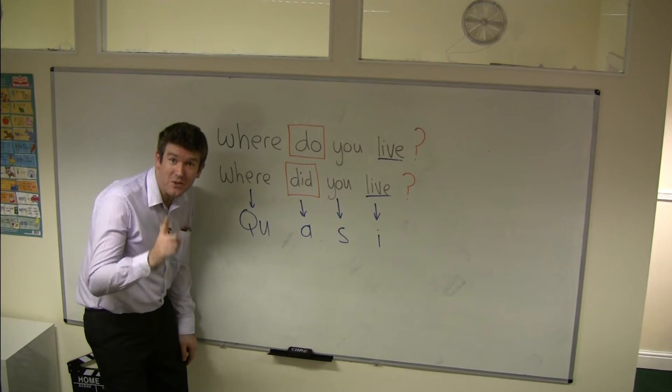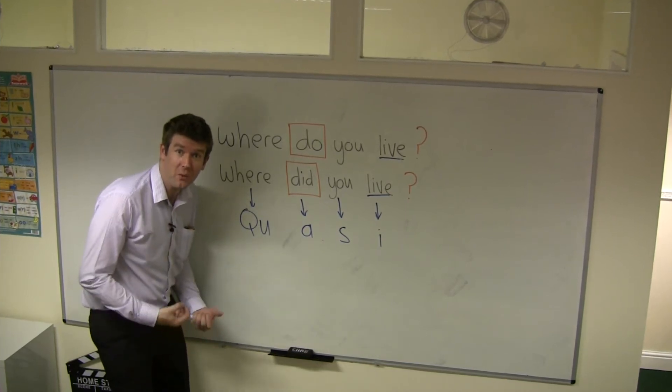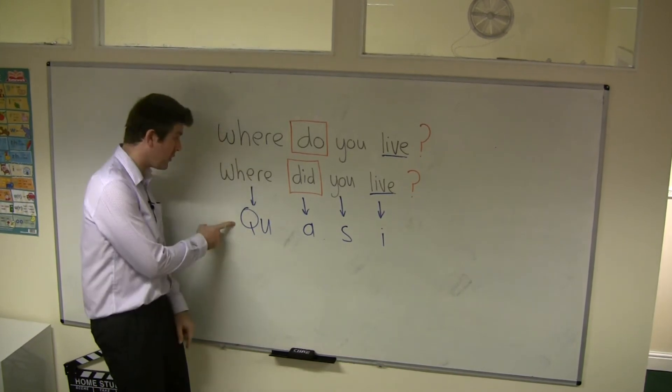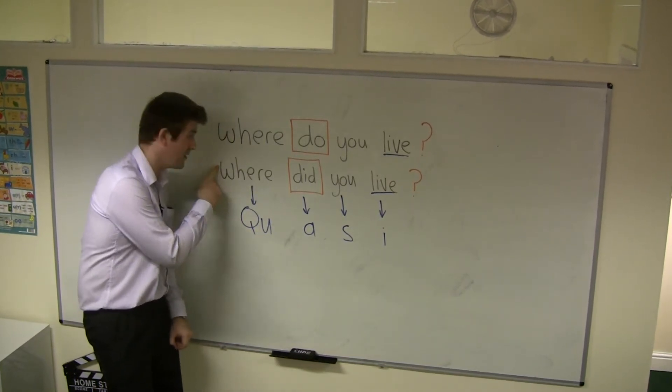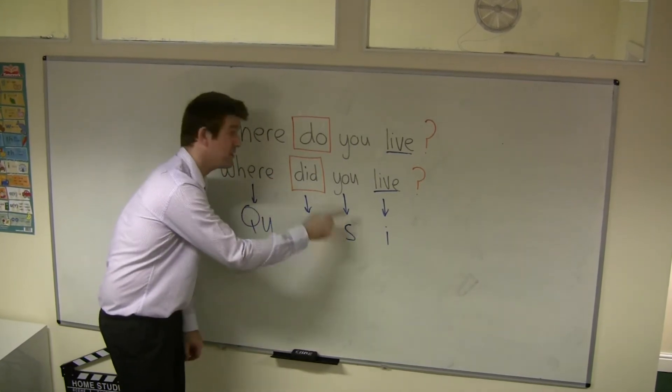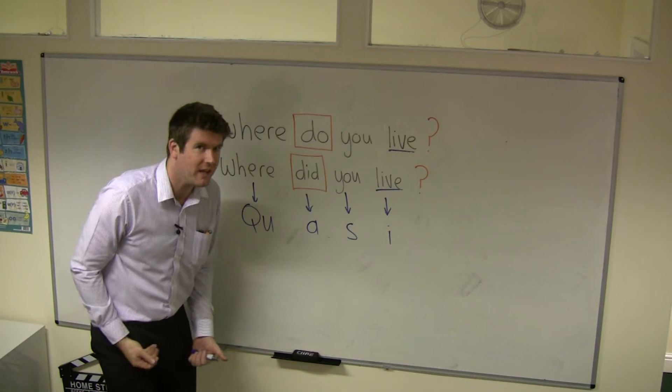An important tip just to help you with the word order with questions, try and remember QUASI. QU for question word, A for auxiliary verb, S for subject: you, he, she, we, you, they, it.